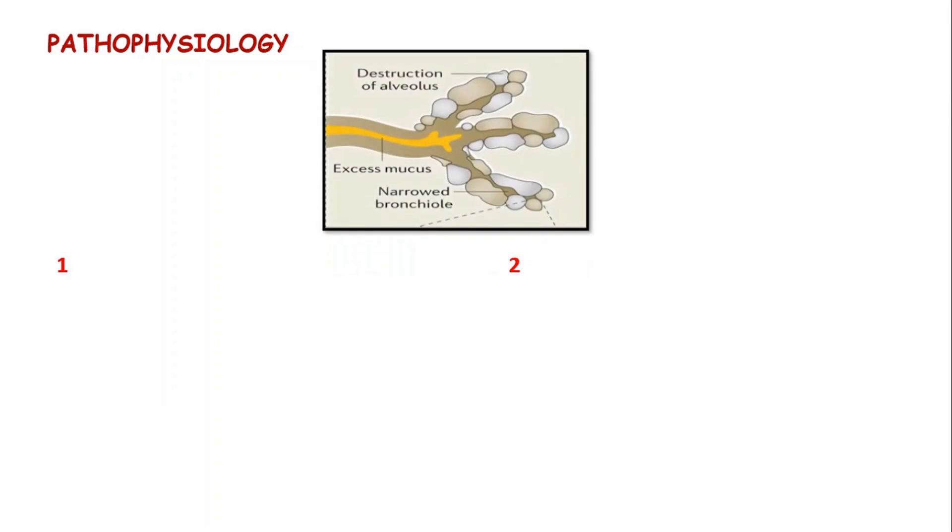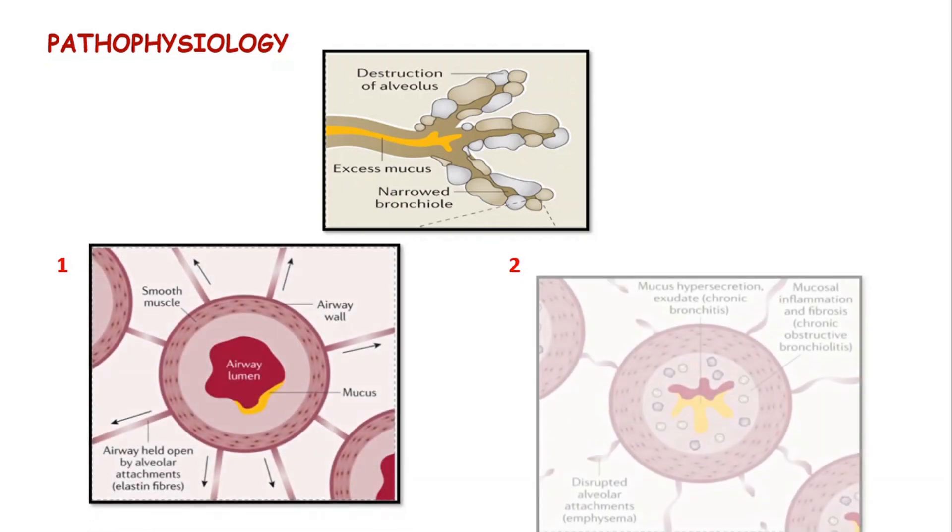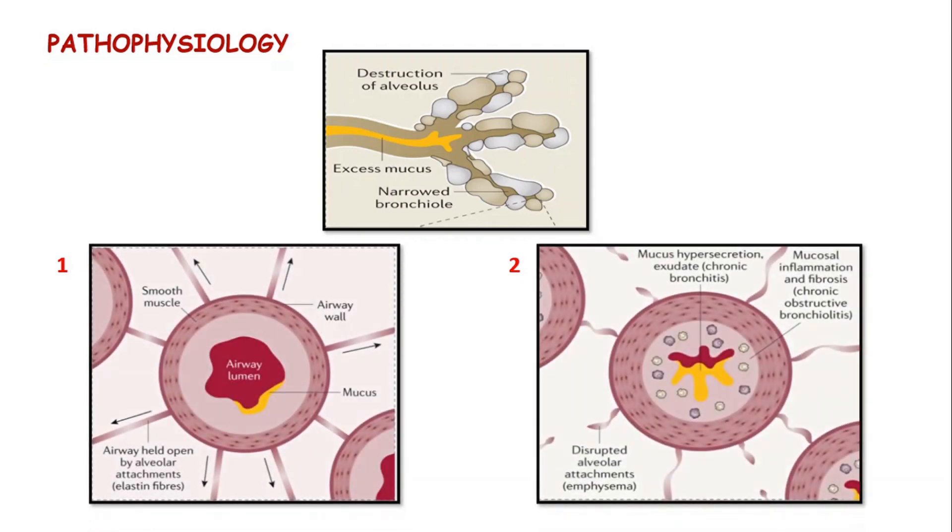Now, coming to the pathophysiology of COPD. The epithelial cells lining the larger and smaller airways are irritated or inflamed and they produce excess mucus into the airways, thus plugging the airways. The smaller airways or bronchioles constrict because of smooth muscle contraction. And finally, there is destruction of the alveolus.